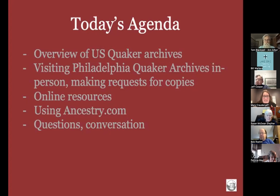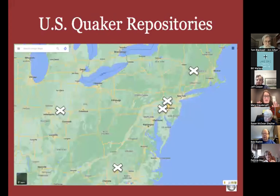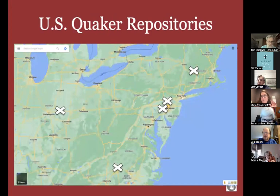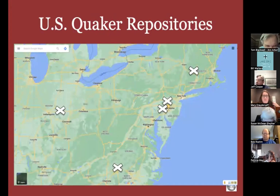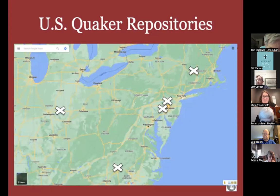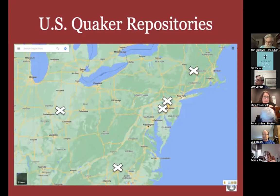There are five major Quaker repositories in the United States, though there are many more archives that hold Quaker materials. Guilford College is situated in Greensboro, North Carolina, and collects from the American South and Southeast. Earlham College in Richmond, Indiana — my alma mater — collects from the Midwest and more western United States. I imagine Lake Erie's repository might be at Earlham, but I did not check that ahead of time.